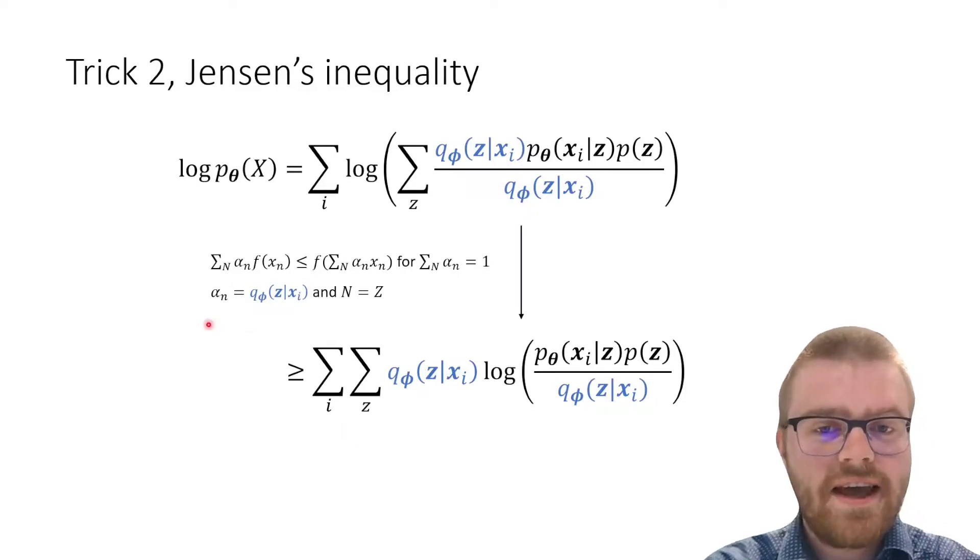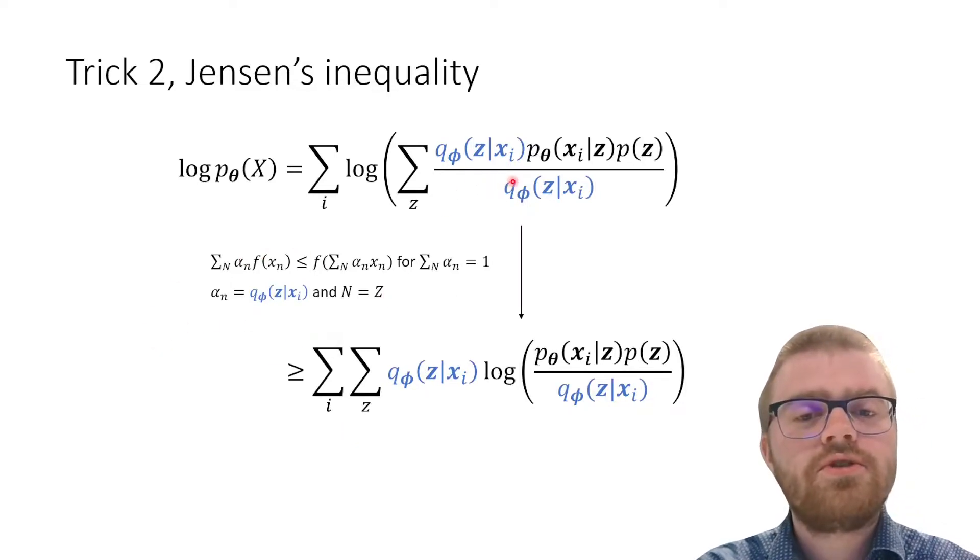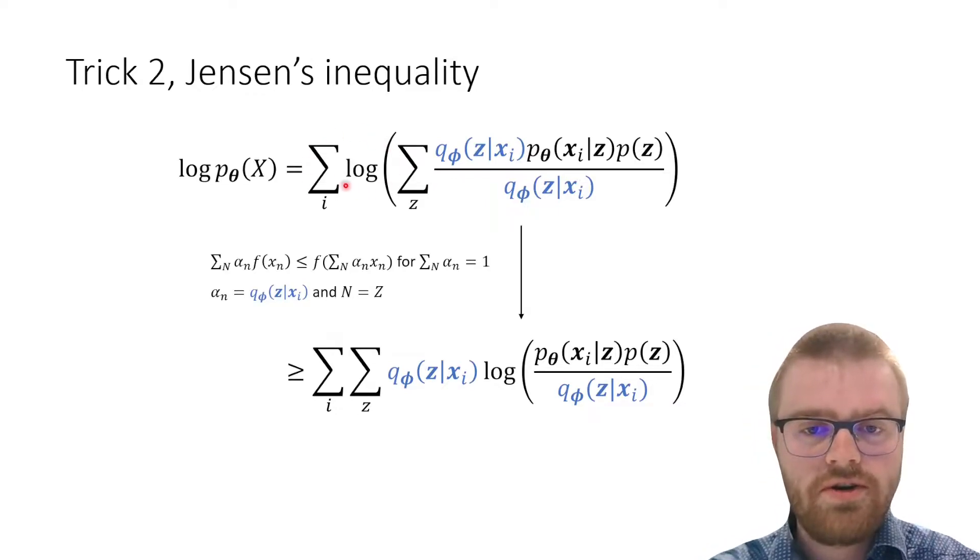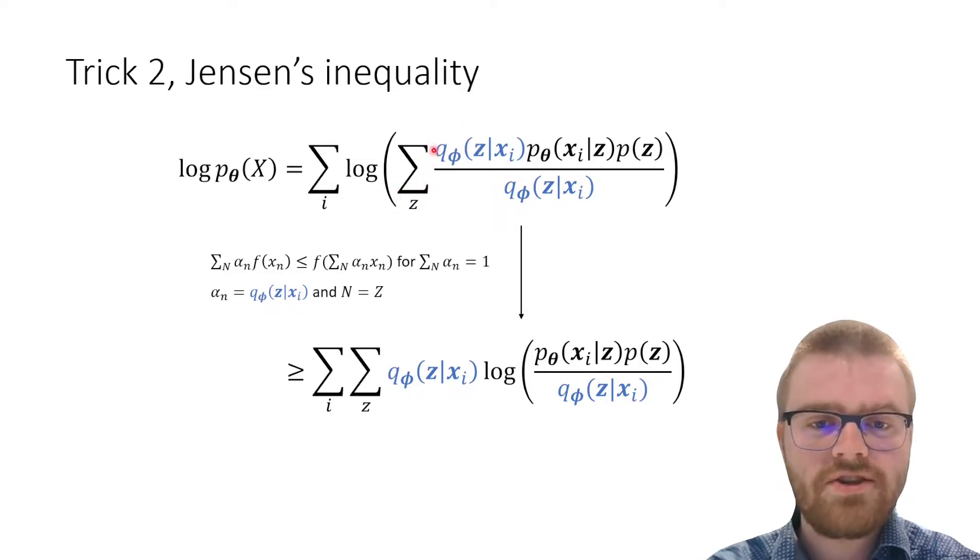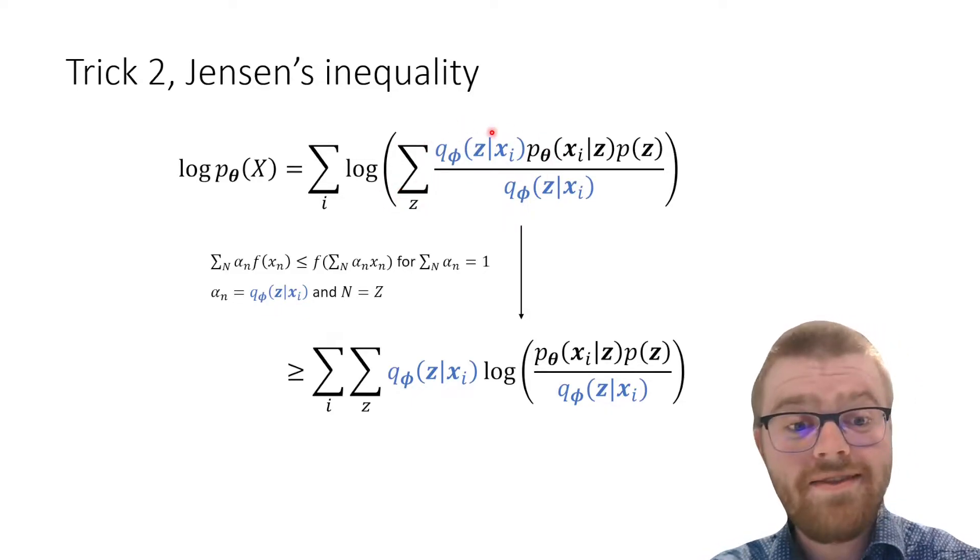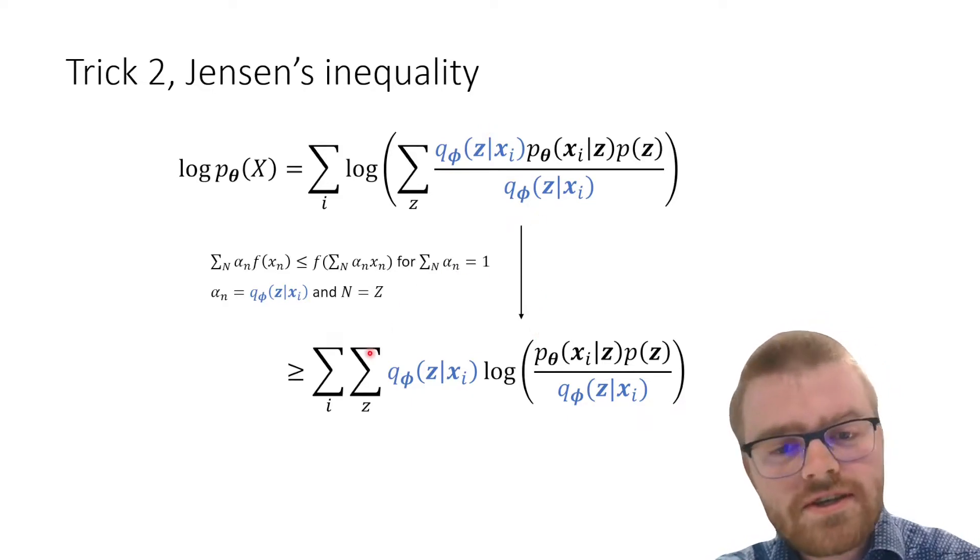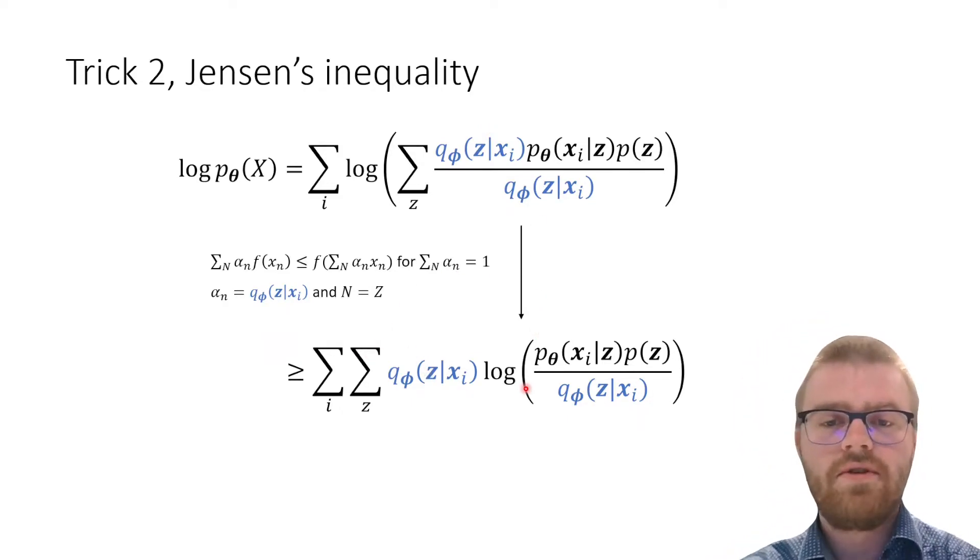This Jensen's inequality is now going to allow us to move this outside of the logarithm. The logarithm is concave and we've got a weighted sum. We can treat this q as the weight and then we can move this sum and the weight outside of the logarithm. And here is the inequality—here is our bound. We can see this inequality happening.